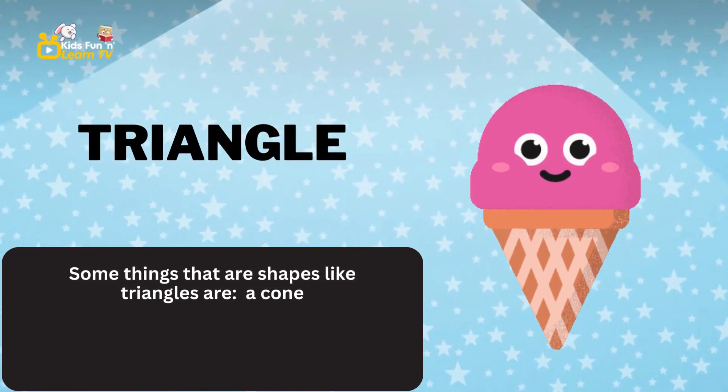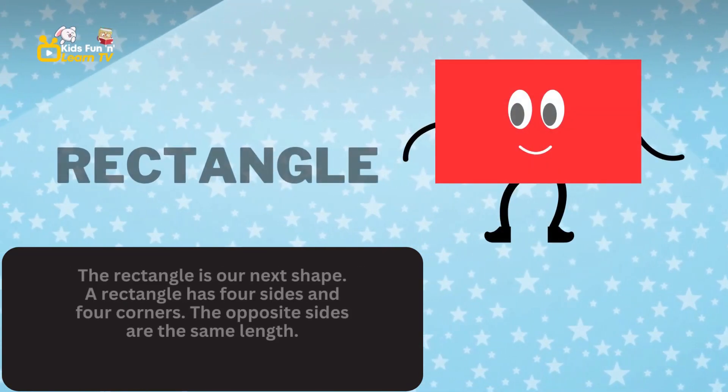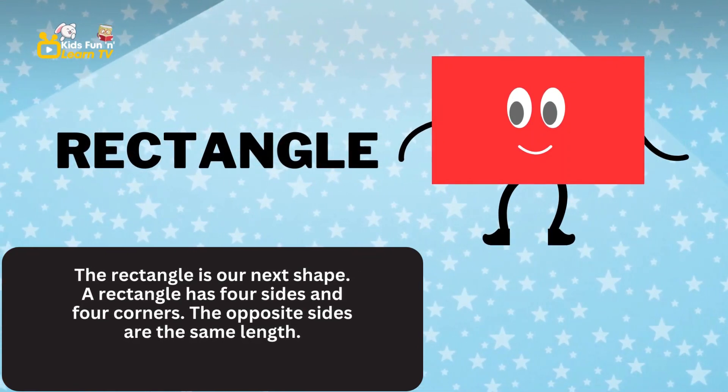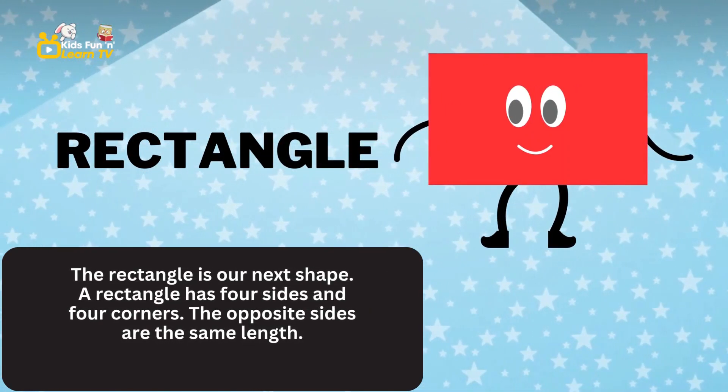The rectangle is our next shape. A rectangle has four sides and four corners. The opposite sides are the same length. Something shaped like a rectangle is a book.